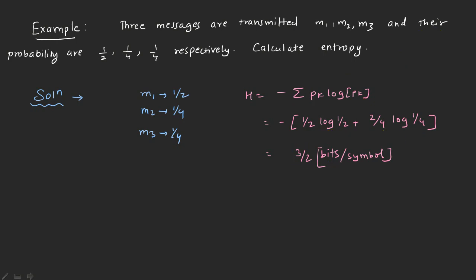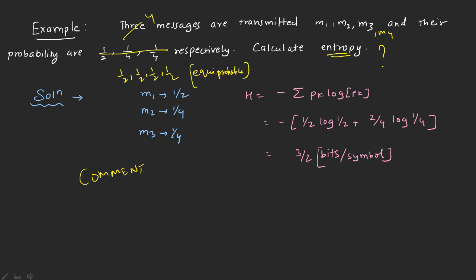This homework question: I have 4 messages m1, m2, m3, and m4, and their probabilities are each 1/2. Calculate the entropy. Comment your answer and I will tell you whether it is correct. The hint is that it is equi-probable, so you use the same derivation concept we have seen.